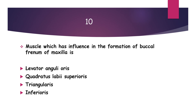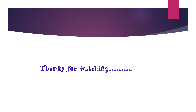Last MCQ: which muscle has influence in the formation of the buccal frenum of the maxilla? Options are levator anguli oris, quadratus labii superioris, triangularis, and depressor anguli oris. There are three frena in the maxilla — one labial and two buccal — and four frena in the mandible. The buccal frenum of the maxilla contains the canine or levator anguli oris muscle, and the buccal frenum of the mandible contains triangularis or depressor anguli oris. The correct answer is levator anguli oris.